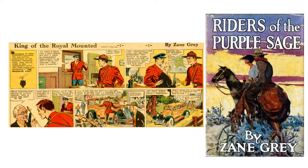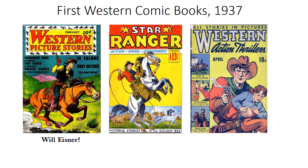Then we get to the birth of comic books, which for the first couple of years were just reprinted comic strips. But in 1937, the floodgates were opened by Detective Comics No. 1, the first comic book with all original new material not from a newspaper. In that same year, 1937, there were at least three Western-themed comic books with new material: Western Action Thrillers, Star Ranger — which came first — and Western Picture Stories, which advertised a story called 'Top Hand' by someone named Will Eisner.